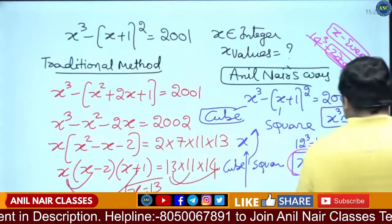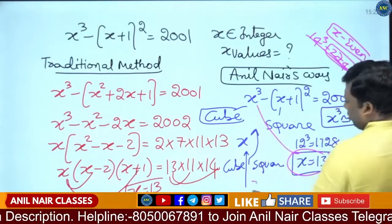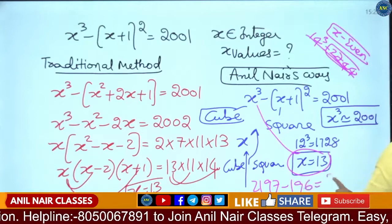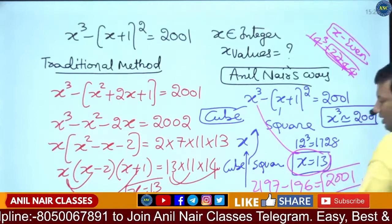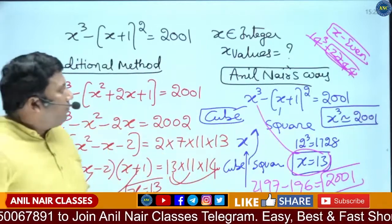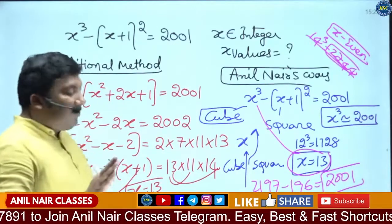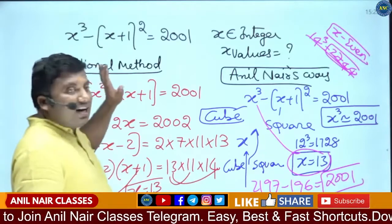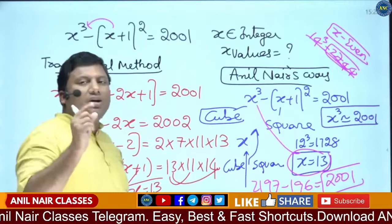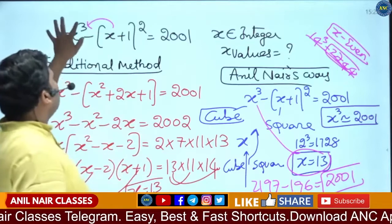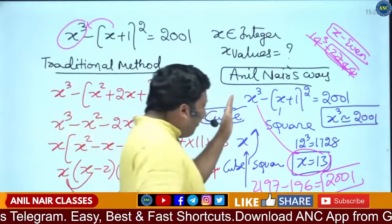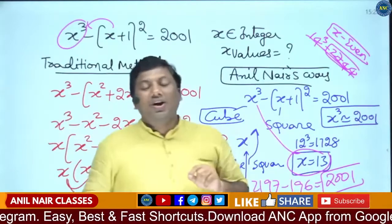Let us check x equals 13: 13 cube is 2197, 14 square is 196. So 2197 minus 196 equals 2001. The idea is very clear. The learning from this question: the square function is very small compared to the cube function, so the value of x cube should be closer to 2001.